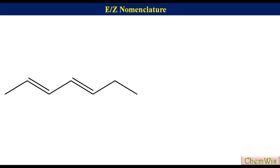For this we will first select the parent chain the way we used to do for IUPAC naming and label it. In the given example there is no branching so the skeleton is our parent chain. We will start numbering from the left because it will give a lower number to the alkene carbon. So the numbering will be: 1, 2, 3, 4, 5, 6 and 7.